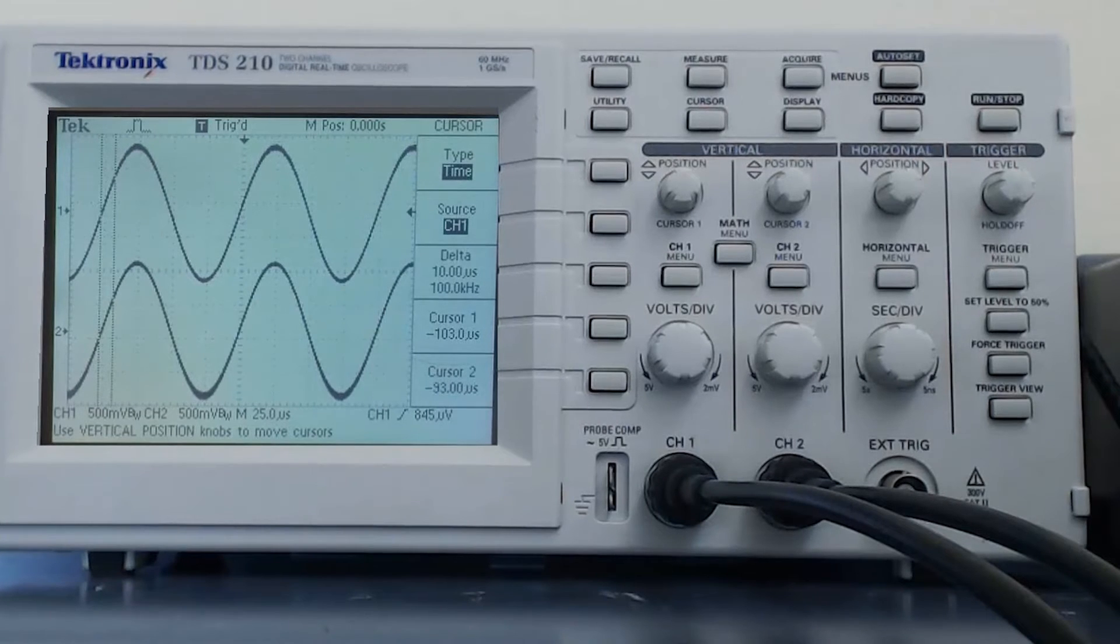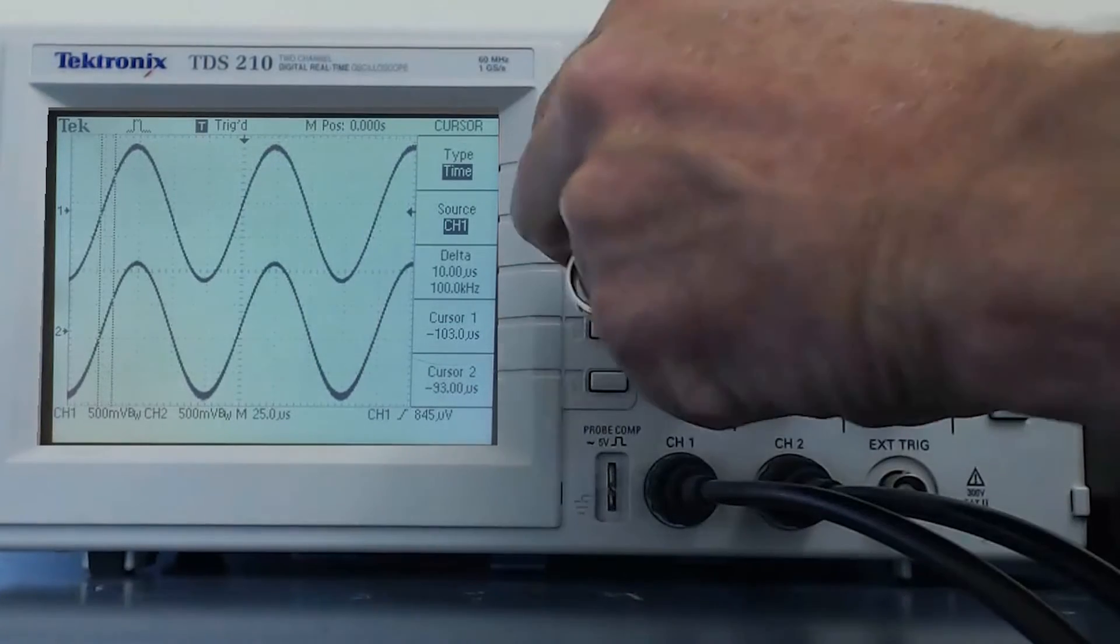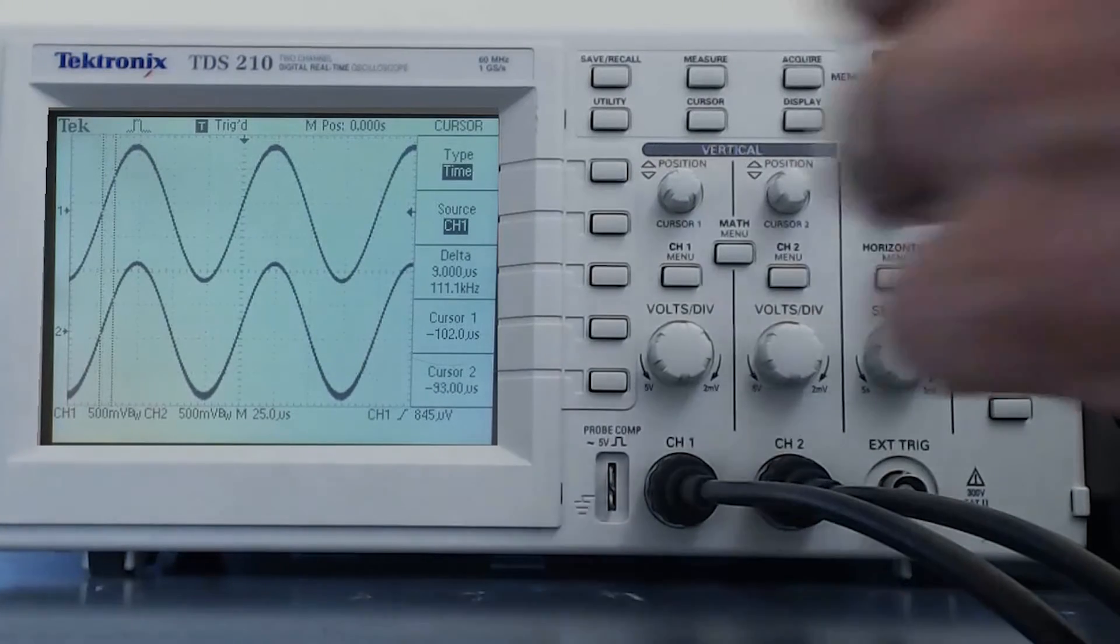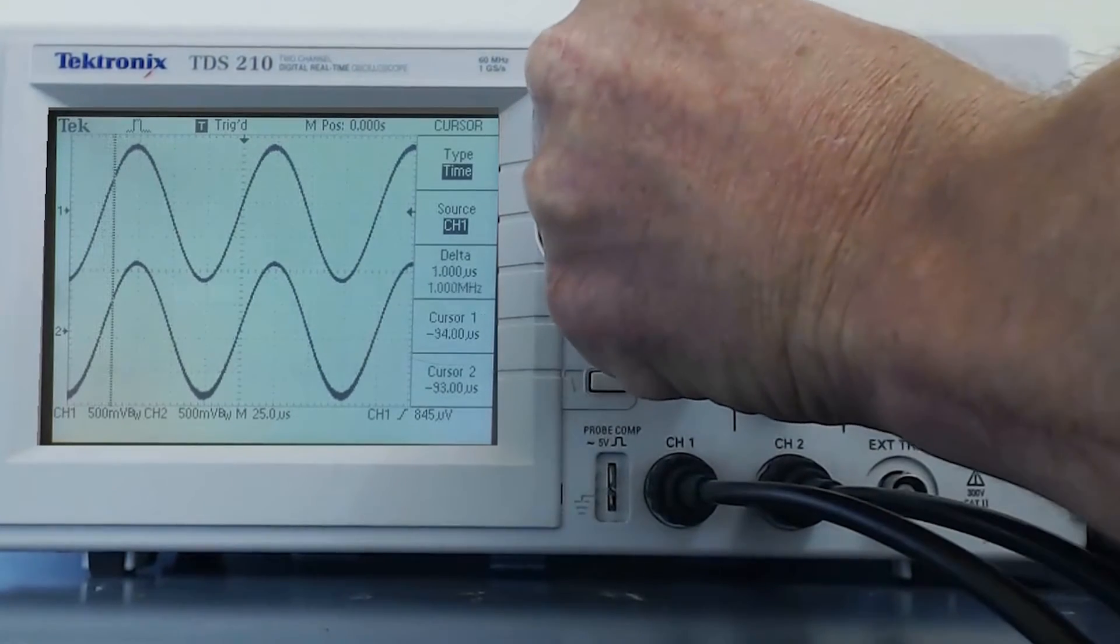When time cursors are selected, we see two vertical lines are present on the screen of the oscilloscope. The position of those time cursors is controlled by the position knobs on the vertical display, so I can move the cursors anywhere I want on the horizontal axis.